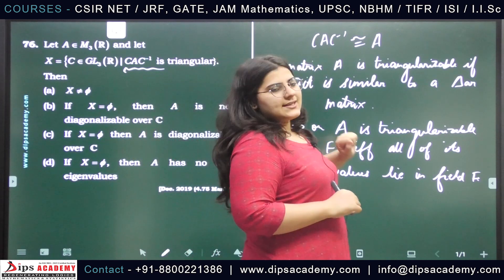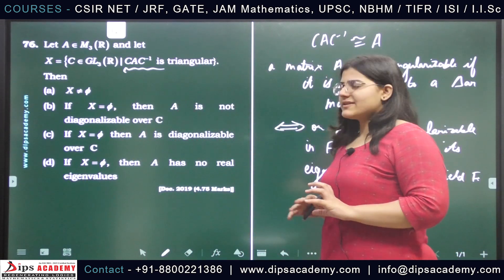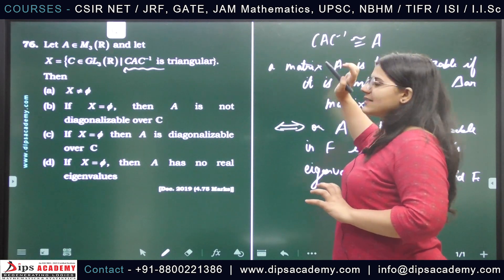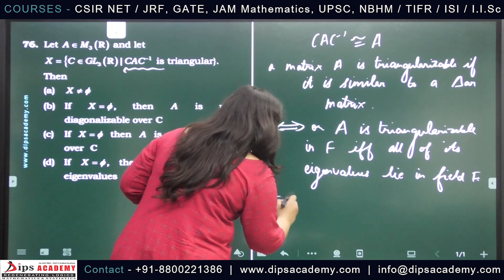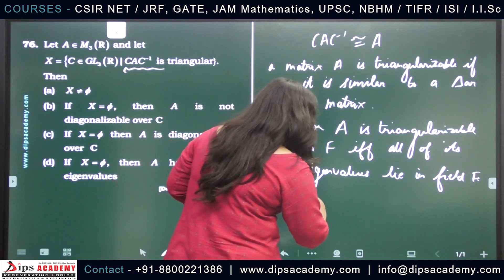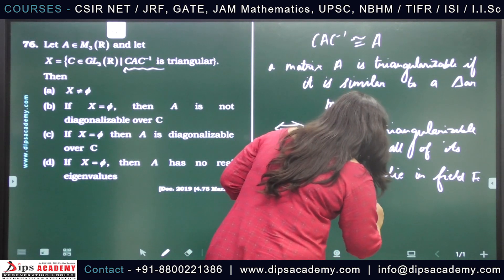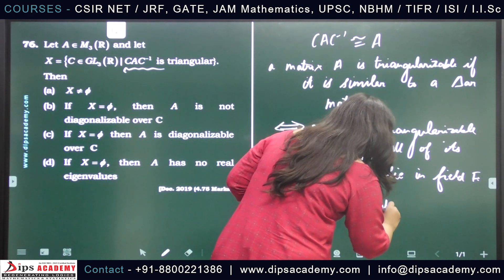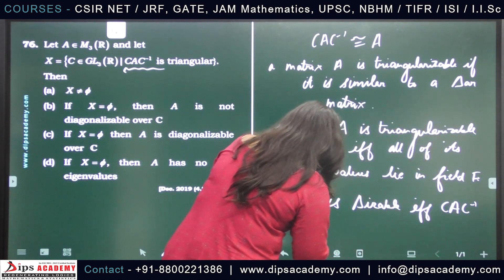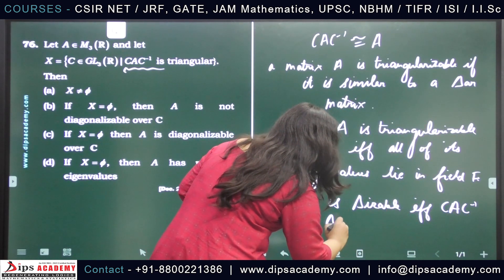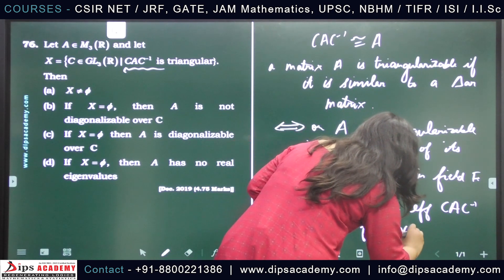Since CAC⁻¹ is similar to A when there exists an invertible matrix C such that CAC⁻¹ is triangular, this implies A is triangularisable. So A is triangularisable if and only if CAC⁻¹ is triangular for some invertible C.